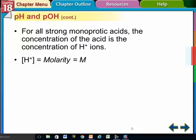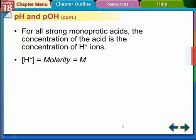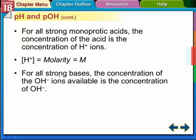So for all strong monoprotic acids, the concentration of the acids is the concentration of the H+ ion. So [H+] = Molarity = M. So that's for the strong acids that have one hydrogen to give. Strong bases, same thing. The available concentration of the OH is the same thing. So [OH-] concentration is the molarity of the OH ion. So those are for strong acids, strong bases. The concentration just equals the molarity.